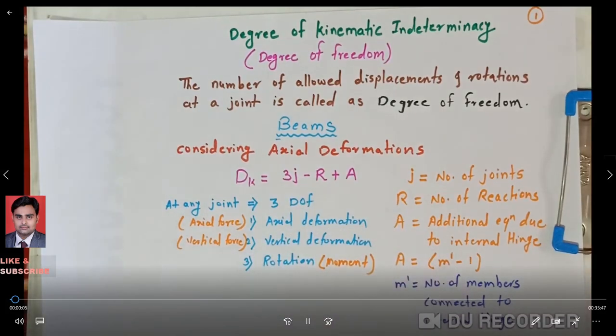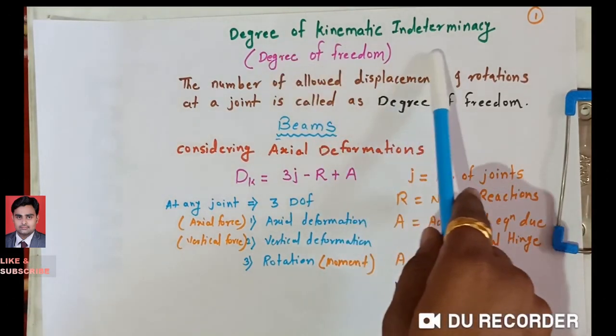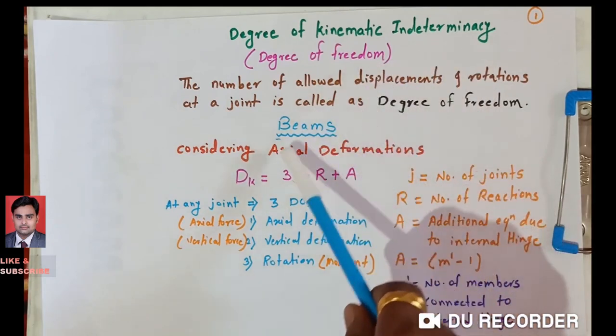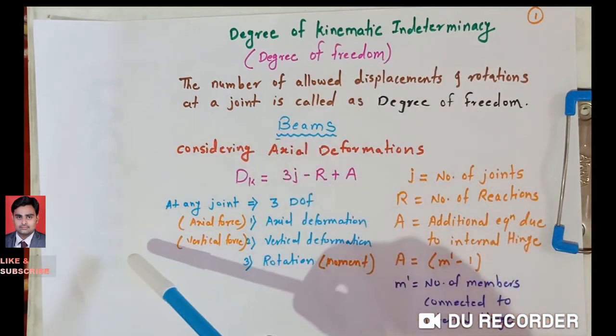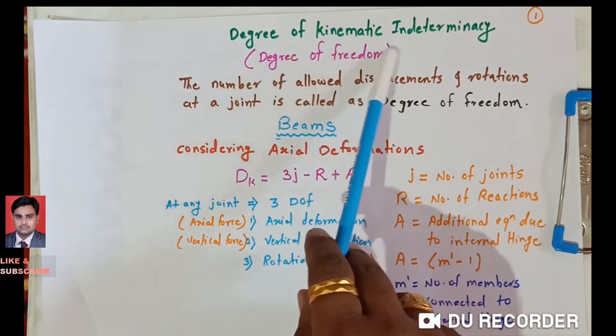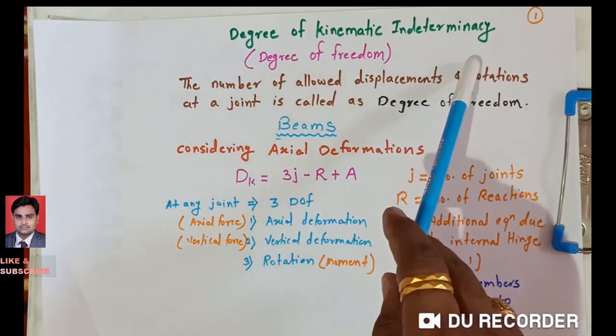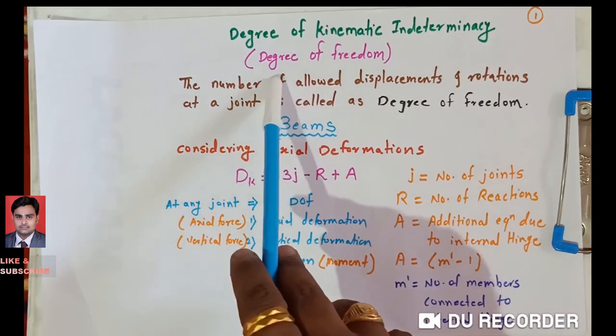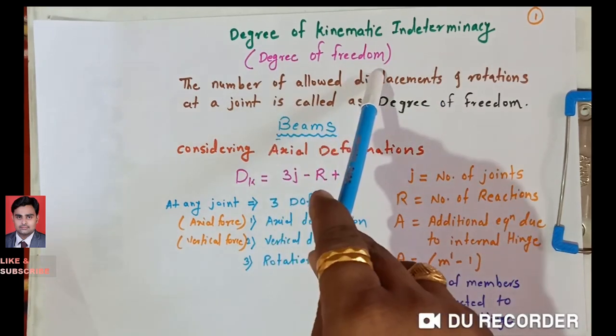Welcome to Civil Technocrats. Today we will see the degree of kinematic indeterminacy for beams. The degree of kinematic indeterminacy is also called the degree of freedom.